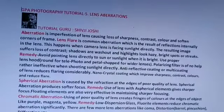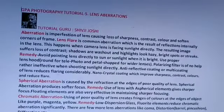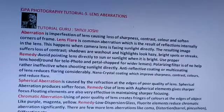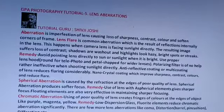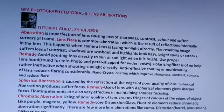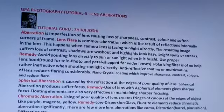Welcome friends in GPA Photography Tutorial Serial No. 5 — Lens Aberrations. Your friend Shubhi Joshi is here. Aberration is imperfection of a lens causing loss of sharpness, contrast, color, and softened corners of the frame.